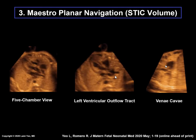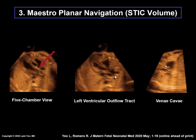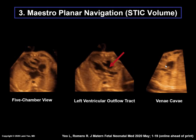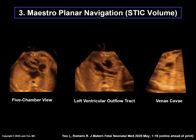Looking more closely at the fine-tuning of each of the three cardiac views: for the five-chamber view, which initially shows the longitudinal view of the aorta, Maestro Planar Navigation successfully obtains the aortic root instead. In the left ventricular outflow tract view, the longitudinal aorta is now shown nicely. Finally, in the vena cava view, the inferior vena cava was not initially seen, but Maestro Planar Navigation now depicts the inferior vena cava well. Notice that there is no multiplanar view or reference dot visualized.